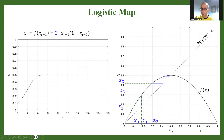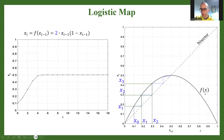This is the bisector — it represents all the values where xi-1 equals xi, meaning the next value equals the current one. And the black curve here is f, which is the function that defines the logistic map. So f gives us the relation between consecutive values.